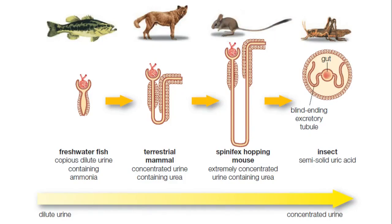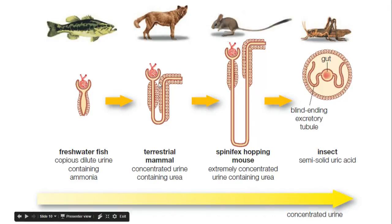Here we can see the difference in urine concentration between different organisms and how the shape of their nephrons changes accordingly. In the spinifex hopping mouse, the loop of Henle is much larger than in freshwater fish or a typical mammal, because they need much more capacity to absorb water, as they live in very hot, arid climates. This is completely different to the excretory structure seen in insects.